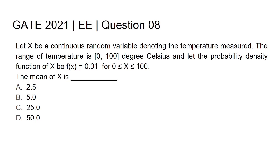Let X be a continuous random variable denoting the temperature measured. The range of temperature is 0 to 100 degrees Celsius and let the probability density function of X be f(x) equal to 0.01.